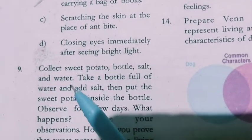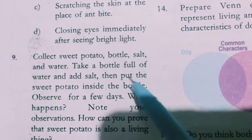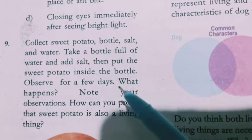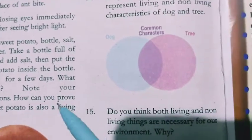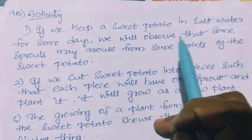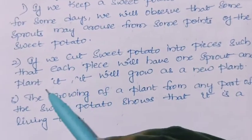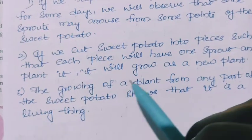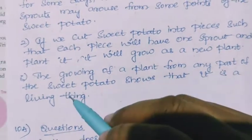Ninth question is an activity. Collect sweet potato, bottle, salt and water. Take a bottle full of water, add salt, then put the sweet potato inside the bottle and observe for a few days. If we keep a sweet potato in salt water for some days, we will observe that some sprouts arise from points of the sweet potato. If we cut sweet potato into pieces so that each piece has one sprout and plant it, it will grow as a new plant. The growing of a plant from any part of a sweet potato shows that it is a living thing.